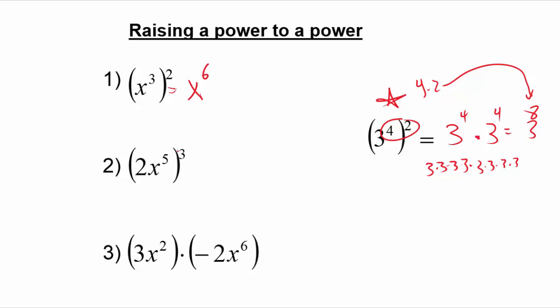For the next problem, we have to take two things to the third power. We have to be careful — we're not taking 3 times 2 to get 6; we know that 2 to the third is 2 times 2 times 2, which is 8. The shortcut applies when these are both exponents: we can take 5 times 3, both being exponents, giving x to the 15th.